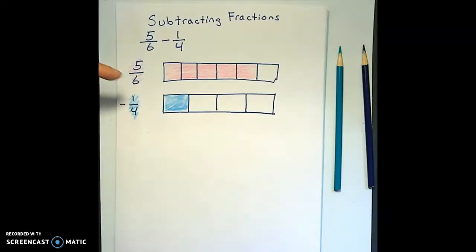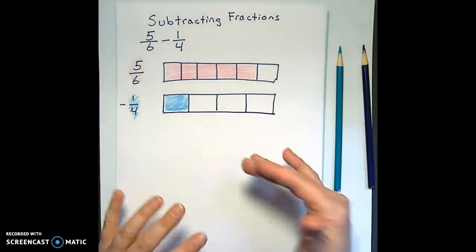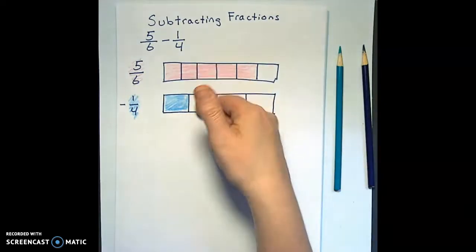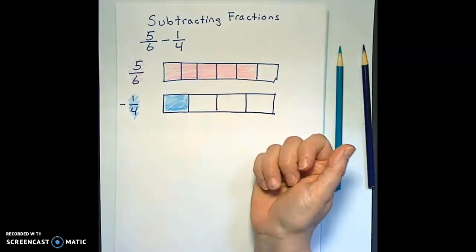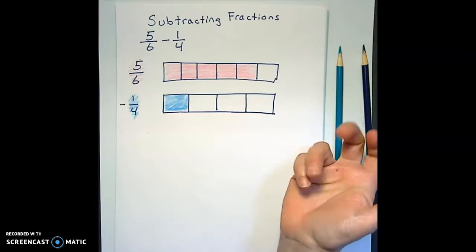So here we have the 1 fourth that we're taking away from the 5 sixths. We can't take it away. What do we do when we're adding or subtracting fractions to make it so that we can add or take away one from the other? So we need to find a least common denominator.